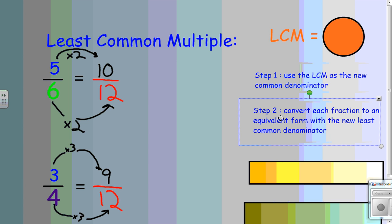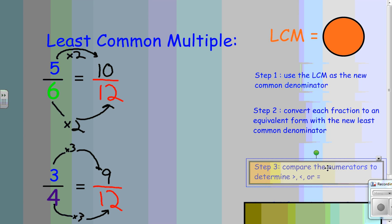Now, let's check the next step. Step number three. Compare the numerators to determine greater than, less than, or equal to. So, when I look at ten-twelfths and compare it to nine-twelfths, I can say ten-twelfths is greater than nine-twelfths.